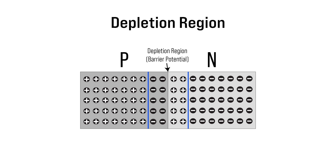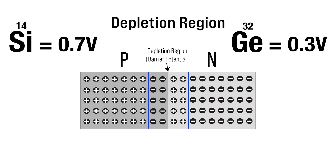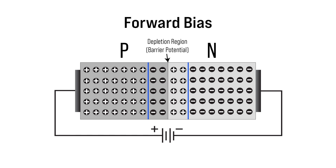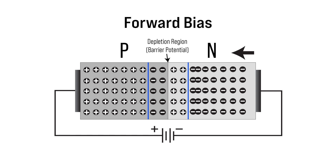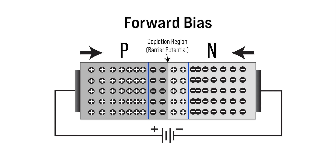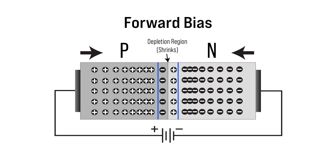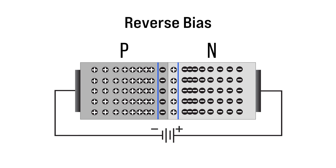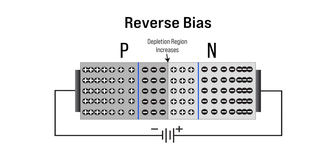This area is called the depletion region and sets up a barrier potential which must be overcome to forward bias the diode — 0.7 volts for silicon and about 0.3 volts for germanium. If we apply an external voltage with the positive terminal to the P-region and the negative terminal to the N-region, electrons are forced toward the P-N junction and holes are forced toward it as well. This causes the depletion region to reduce and current flows. This is forward biasing the diode. If we flip the polarity, holes are attracted to the negative terminal and electrons to the positive terminal, causing the depletion region to increase and making the diode act like a very high-value resistor. This is the reverse bias condition.